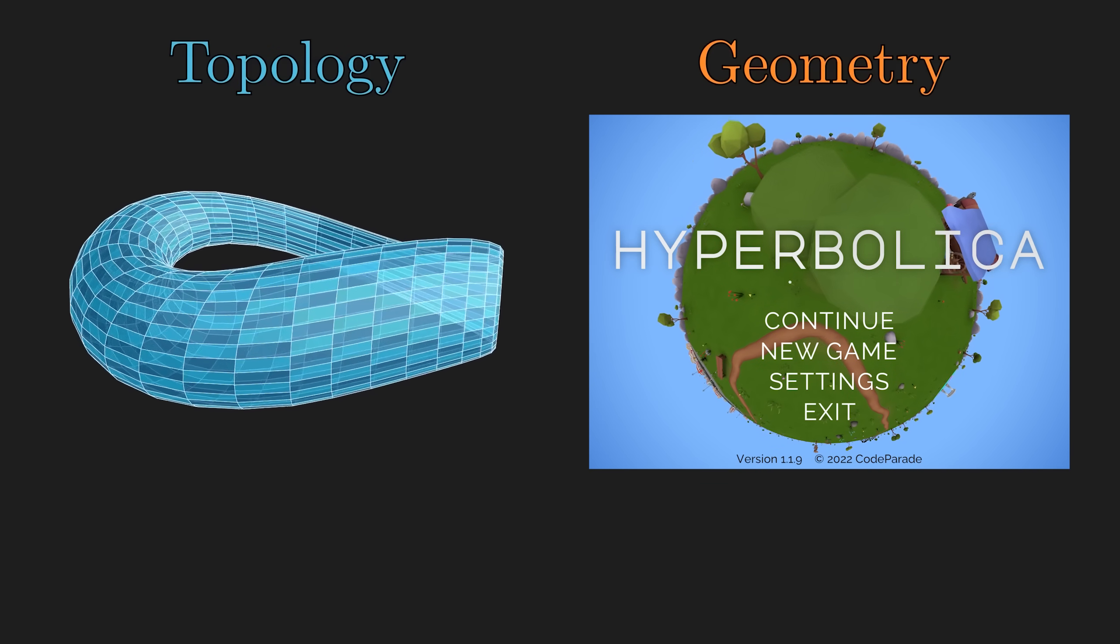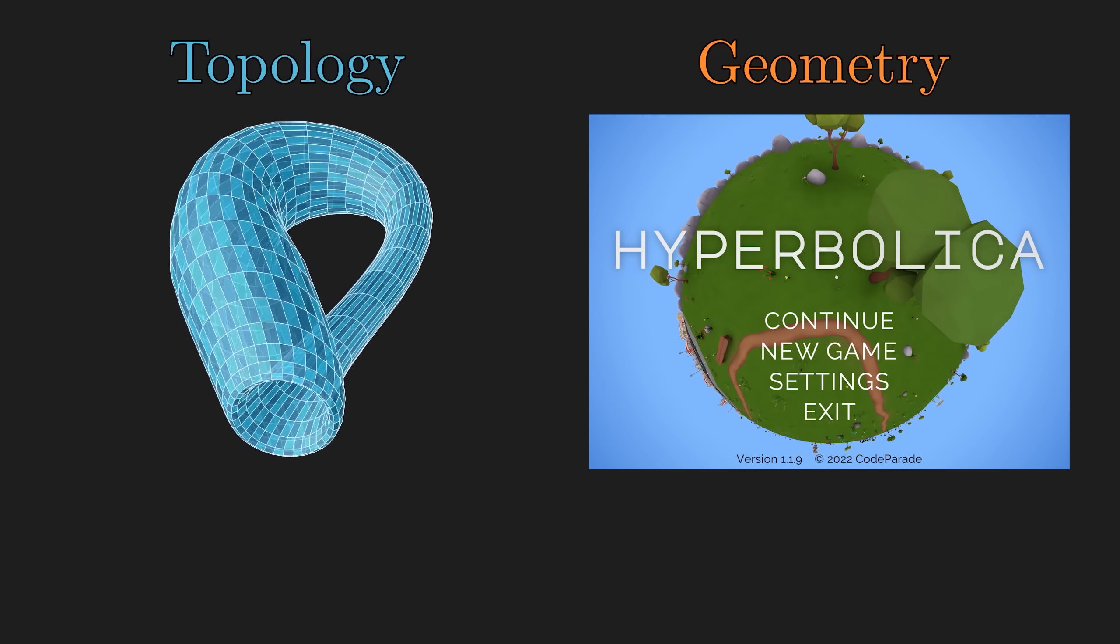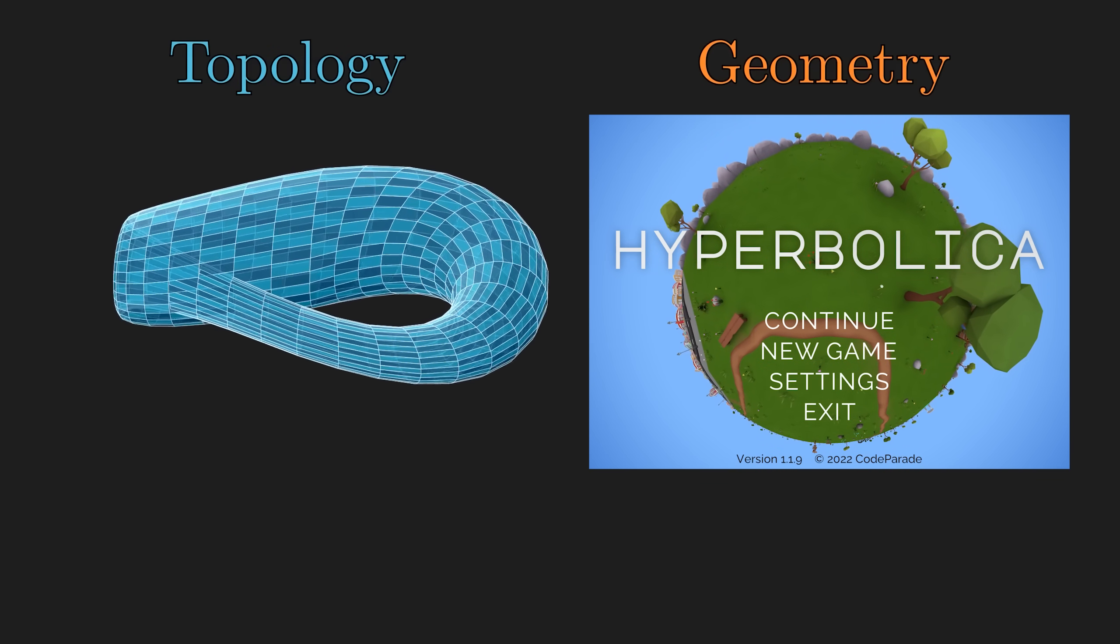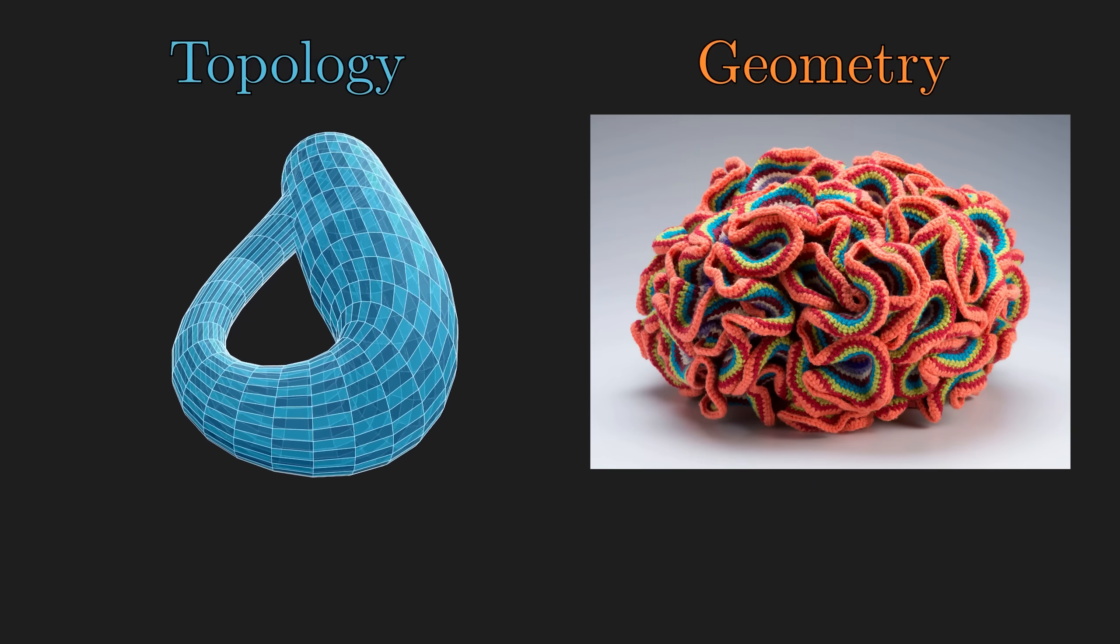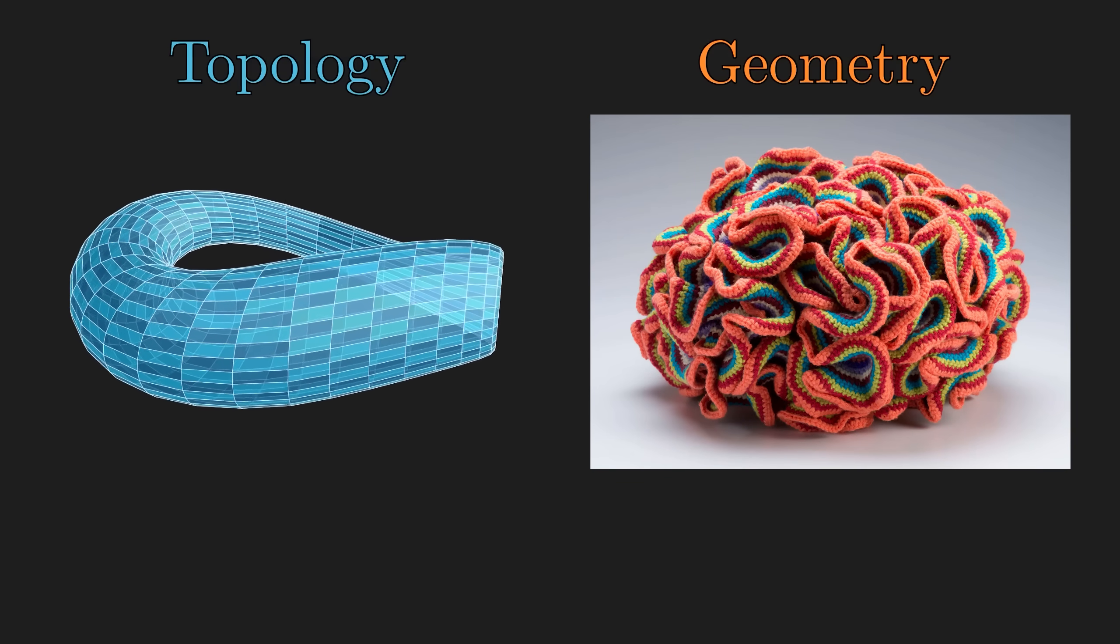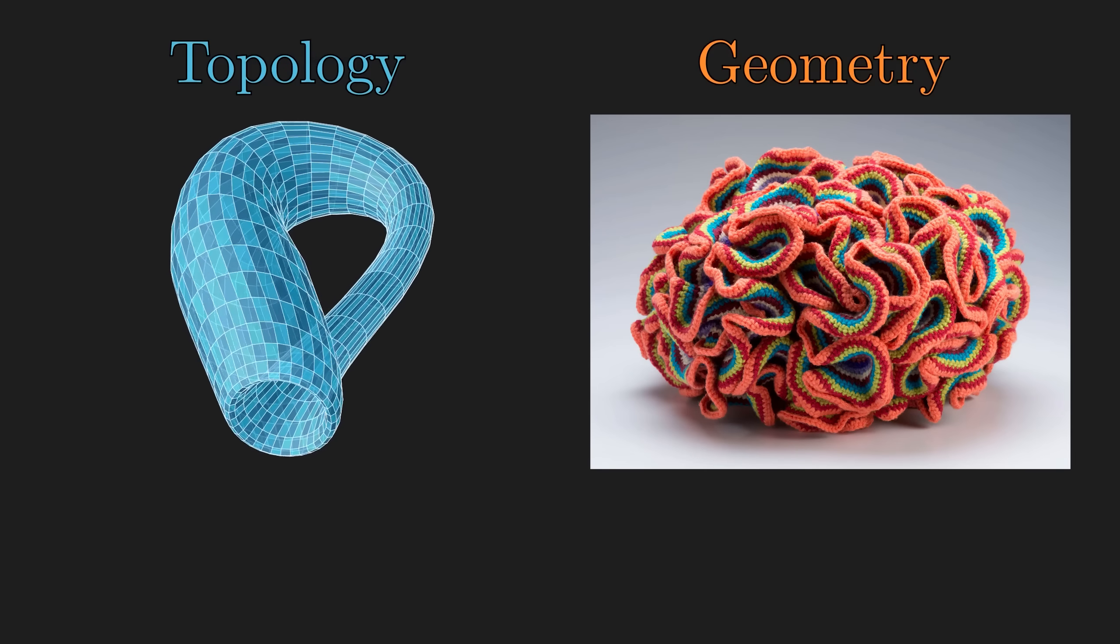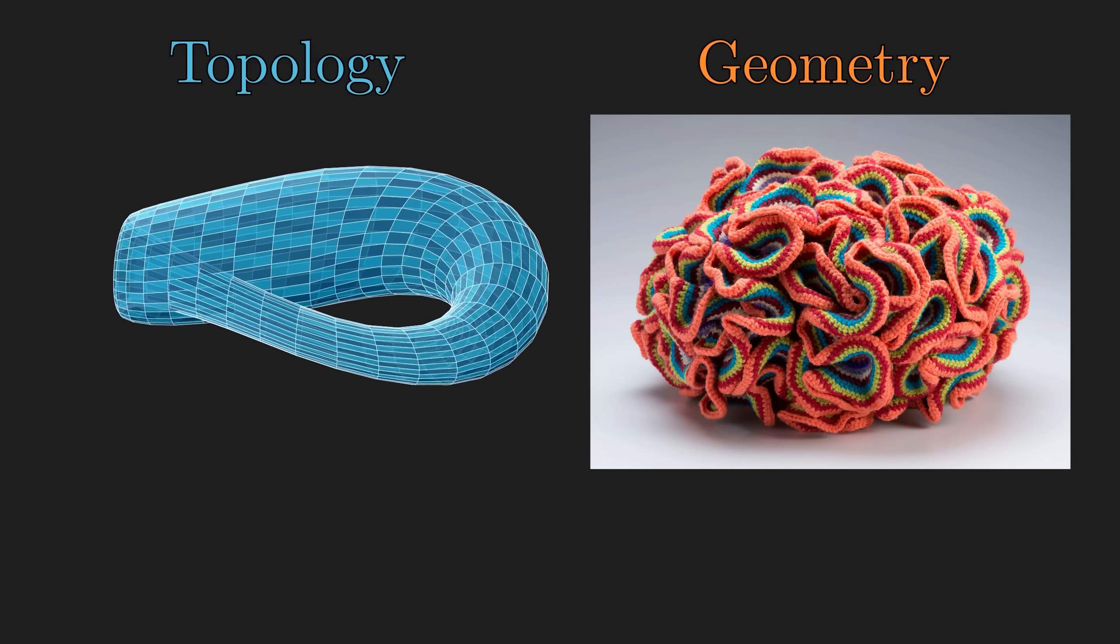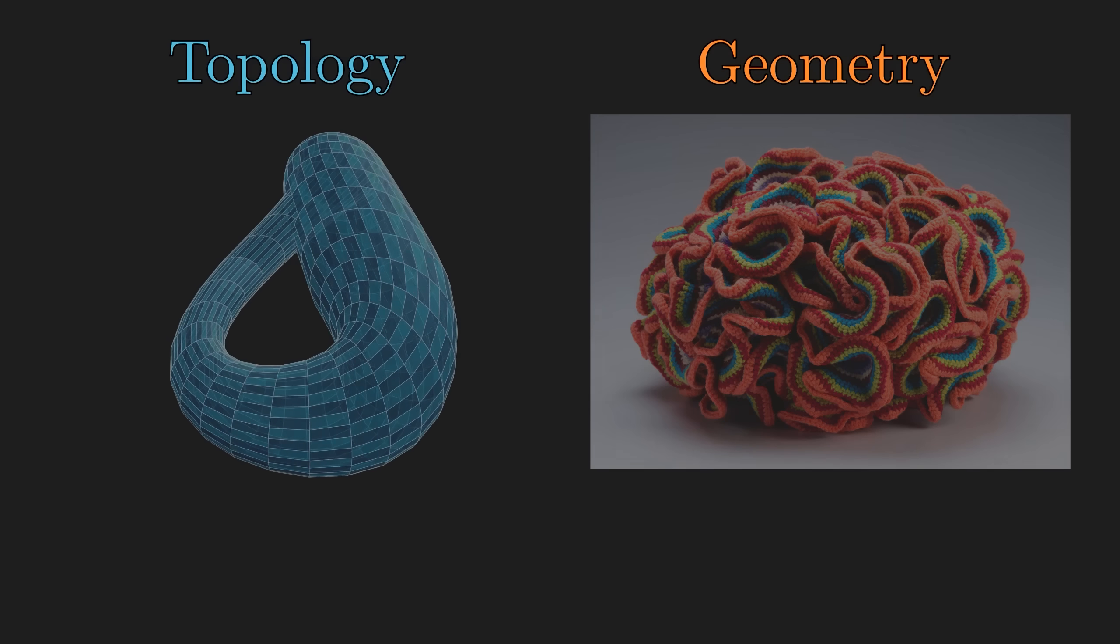For example, the hyperbolic plane is topologically equivalent to the flat 2D plane, but it is much more stretched out. And if we try to take a reasonably small region on the hyperbolic plane and fit it into flat 3D space, maybe you could guess that it could be impossible to fit the entire infinite plane in flat 3D space.